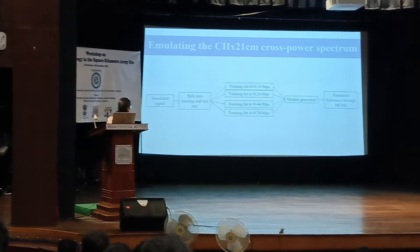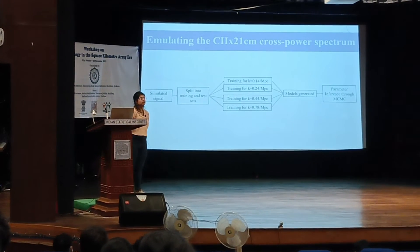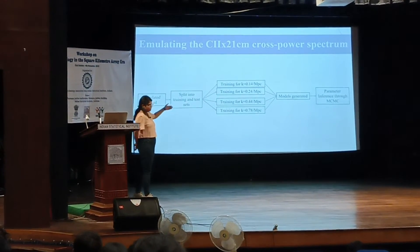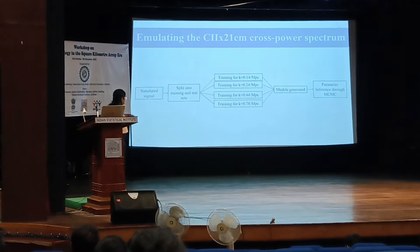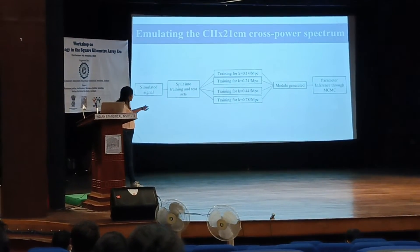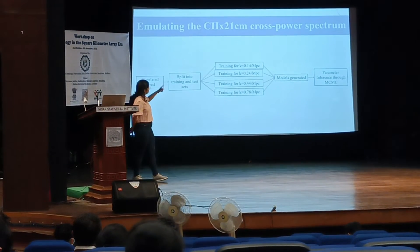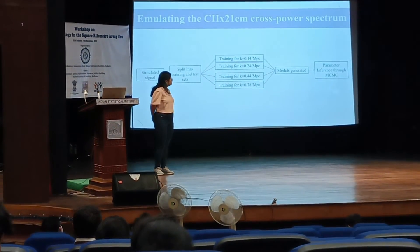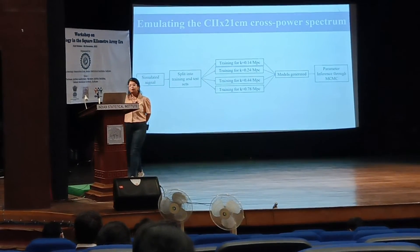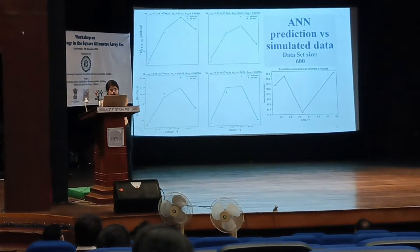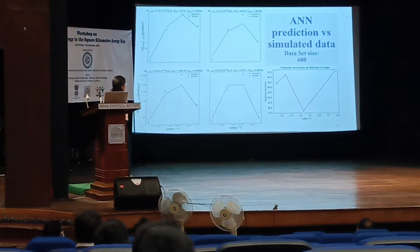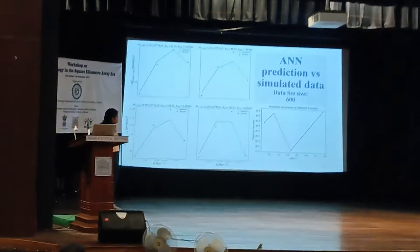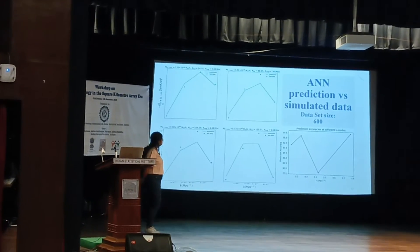From there we move to the next part, which is the CII 21cm cross-power spectrum. We simulated a bunch of data, split it into training and test sets, and then trained four different models for four different k-modes. After the models were generated, we tried to perform parameter inference. Using the four different models, this is the kind of estimates we are getting at this point — every k-mode has a different model — using a dataset size of 600.